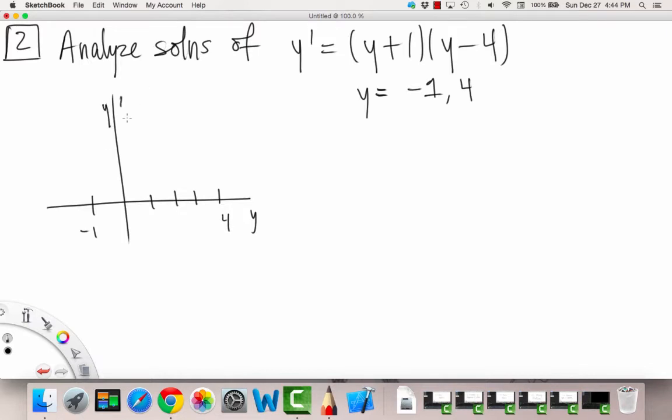There we are. And that's y prime. So we're just going to draw our open dots both at negative 1 and 4. And this is an upwards facing parabola. So we're going to have it going like this and coming down and going up again on the right side.